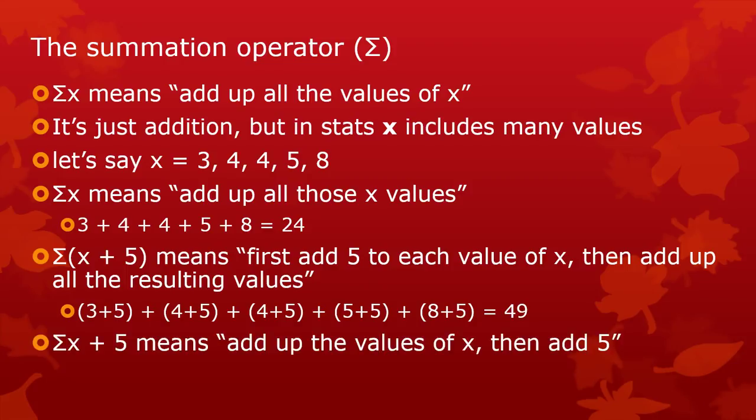But if you have sum of x plus 5 with no parentheses, Σx + 5, then first you just go left to right. This is addition. So you add up all the values of x first, then you add 5. So all the values added up are 24. Add 5 to that, that's 29. These orders of operations will make a big difference when you're trying to work out any of your calculations, because we often have a summation operator in almost anything that we do.